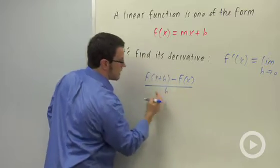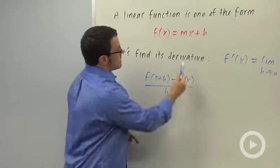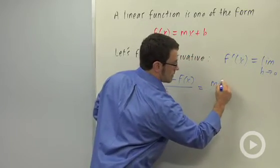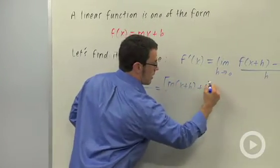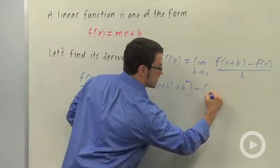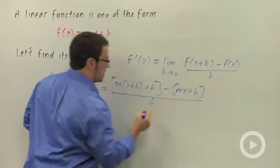Now, in this case, our f of x is mx plus b. So f of x plus h is going to be m times x plus h plus b. m times the quantity x plus h plus b. And then I subtract from that f of x, so that's minus mx plus b. And I divide that by h.